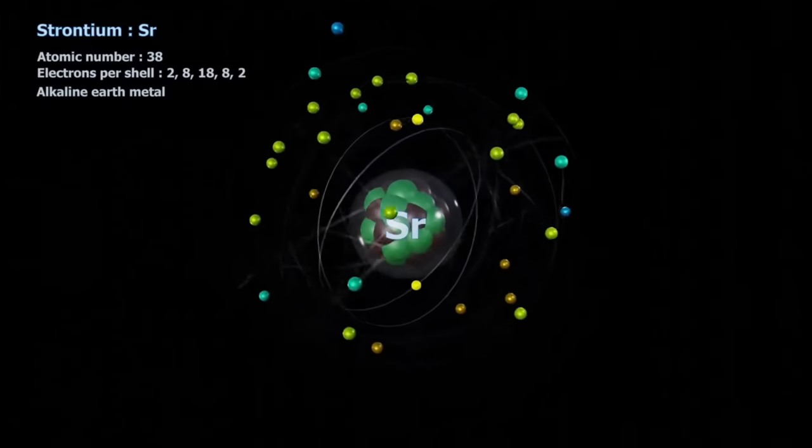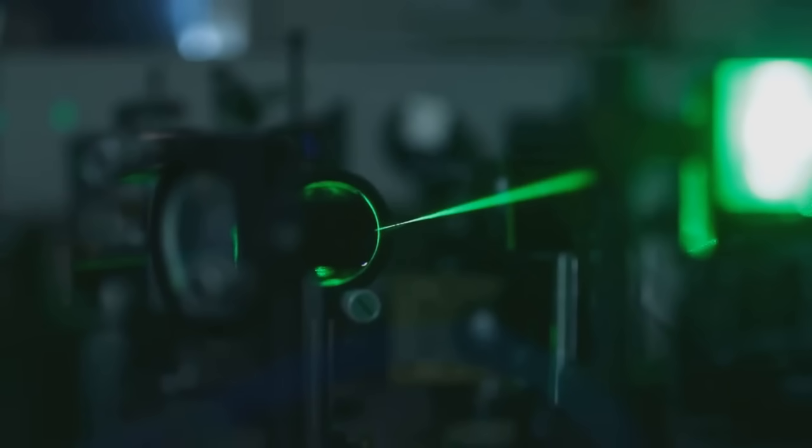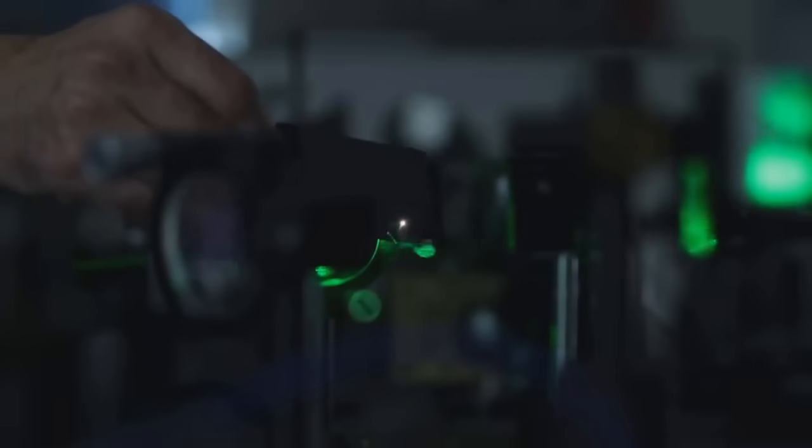The photo, which shows a strontium atom suspended in an electric field, may look like a speck of dust. But what you're seeing is one of the building blocks of the universe. Suspended between two electrodes, it was illuminated with a laser that caused the atom to scatter visible light. That glow was enough to be captured by a regular camera.